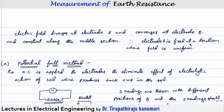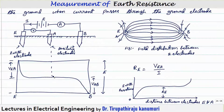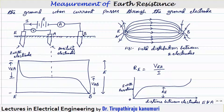Therefore, electrode A is fixed at a location where the field is uniform. But practically, locating the exact location of uniform field is very difficult. So practically, we place electrode A between electrodes E and B, measure the voltage and current, then shift electrode A by some distance to the left, measure again, and shift by some distance to the right and measure again. In all three readings, the voltmeter reading should show a nearly same value — only a little variation is allowed.